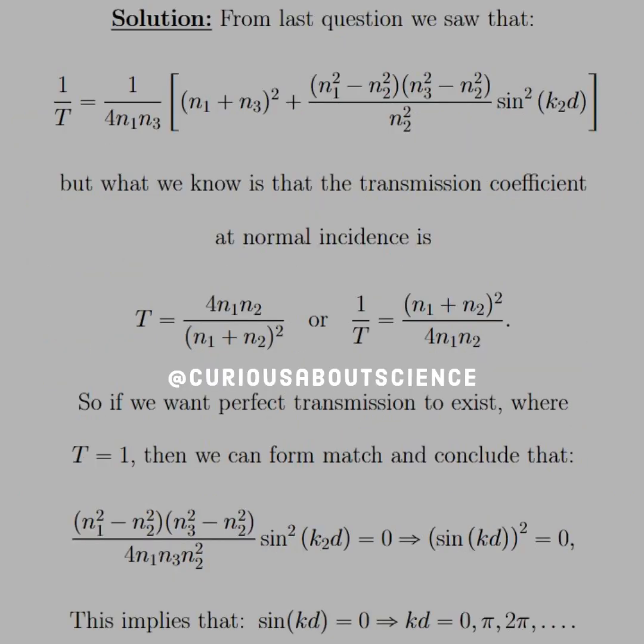Okay, well, from the last question, we saw that for transmission from the antenna through the medium to outside, we have three mediums there, so we know what the 1 over T looks like from the last question. I'm not going to read it out, but you can see it there.